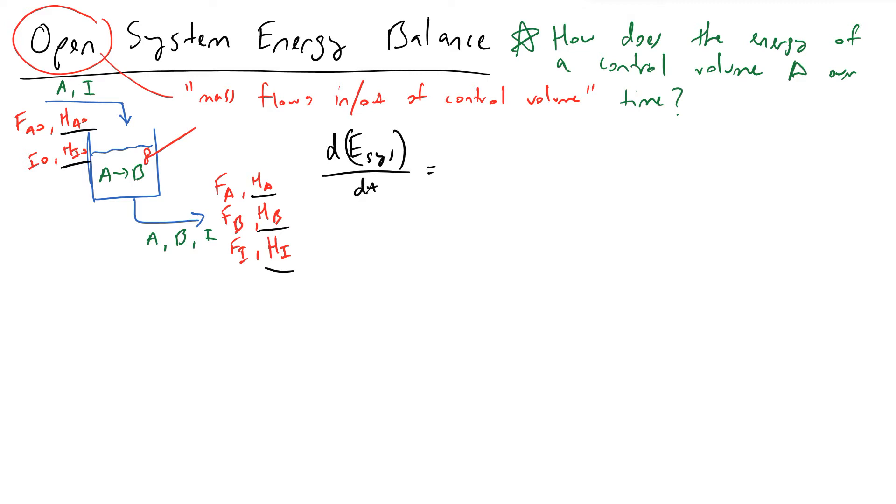This is equal to whatever energy comes in the form of heat into your system, and so we can diagram this as the following with Q dot. Q is positive if we're putting heat into our system, is negative if we're taking heat out of our system, minus Ws.